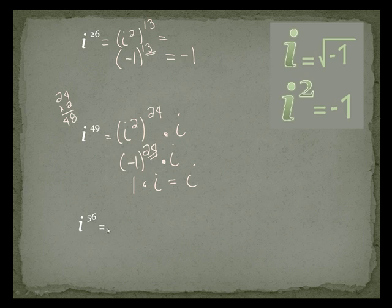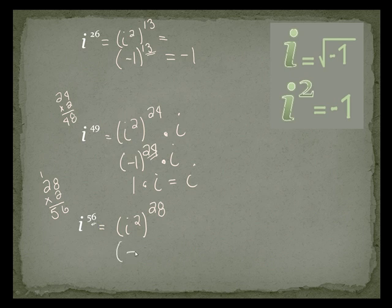i to the 56: that's i squared raised to the 28th power, because 28 times 2 is 56. i squared is negative 1, so this is negative 1 raised to the 28th power. A negative 1 raised to an even power is positive 1.